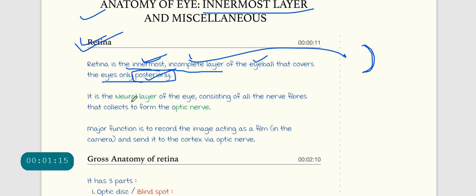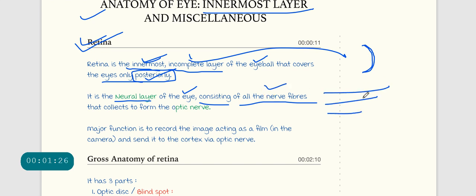The retina is the neural layer of the eye. It consists of all the nerve fibers, and these nerve fibers collect and form the optic nerve at the posterior aspect. We studied the opening, the curved fascia, and the two structures in the previous lecture.